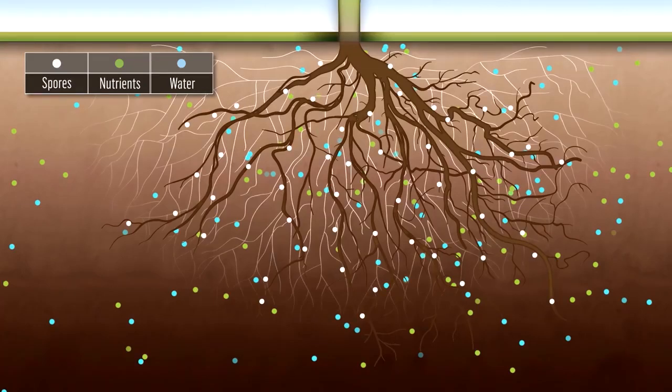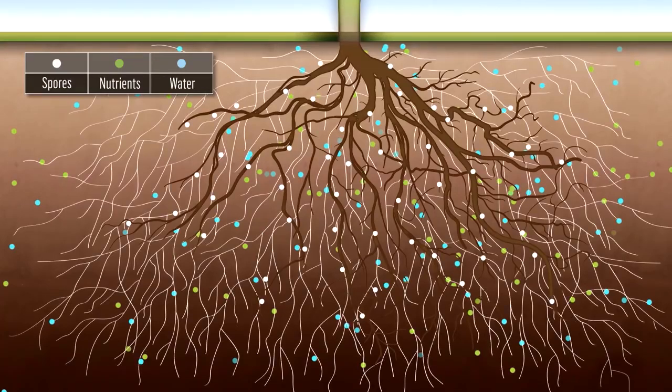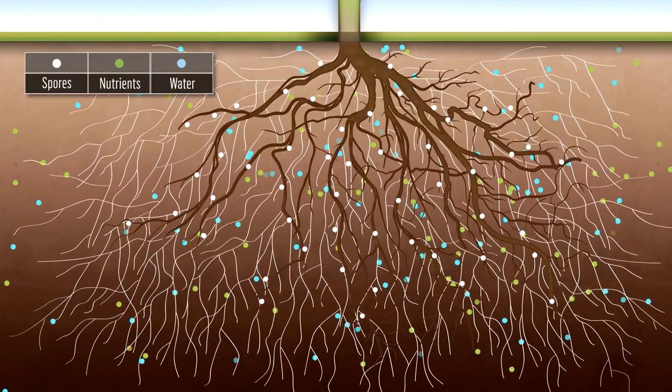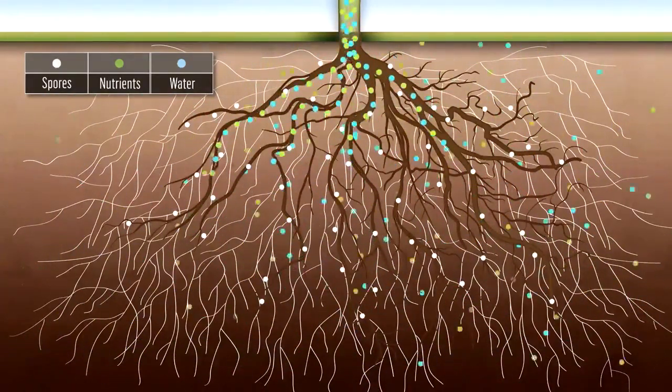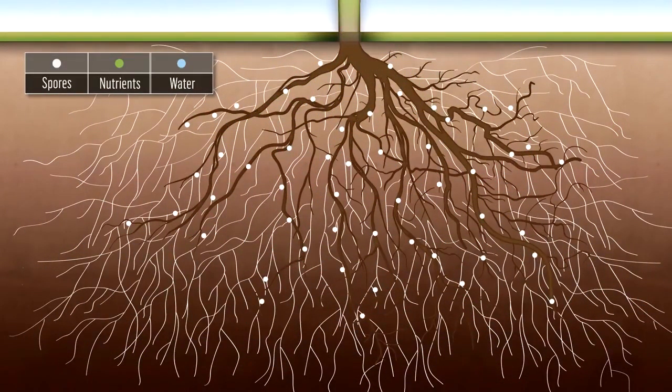Basically, mycorrhizae form a network of fine filaments that associate with the plant roots to draw nutrients and water from the soil that the root system would not be able to access otherwise.